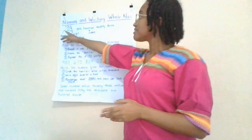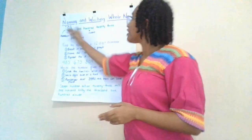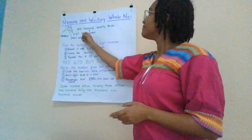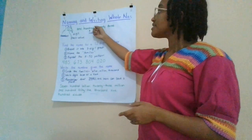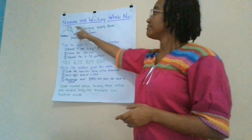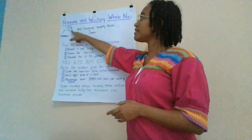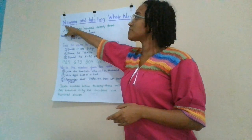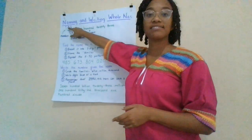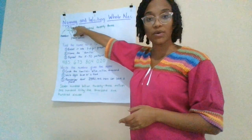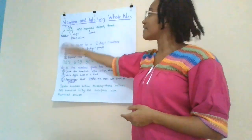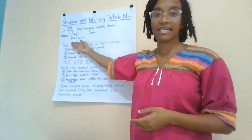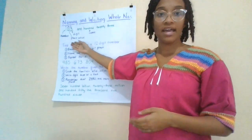This is the number 123. This is the number's name. This is how we write the number. The one is in the hundreds place, the two is in the tens place, and the three is in the ones place. That's what we call place value.